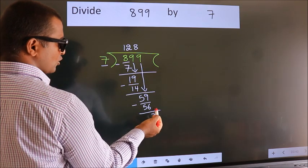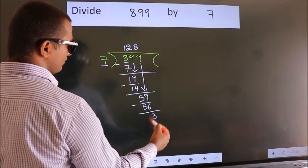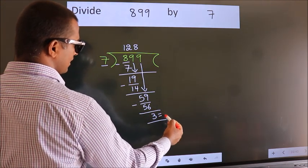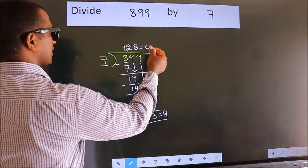No more numbers to bring down. So we stop here. This is our remainder. This is our quotient.